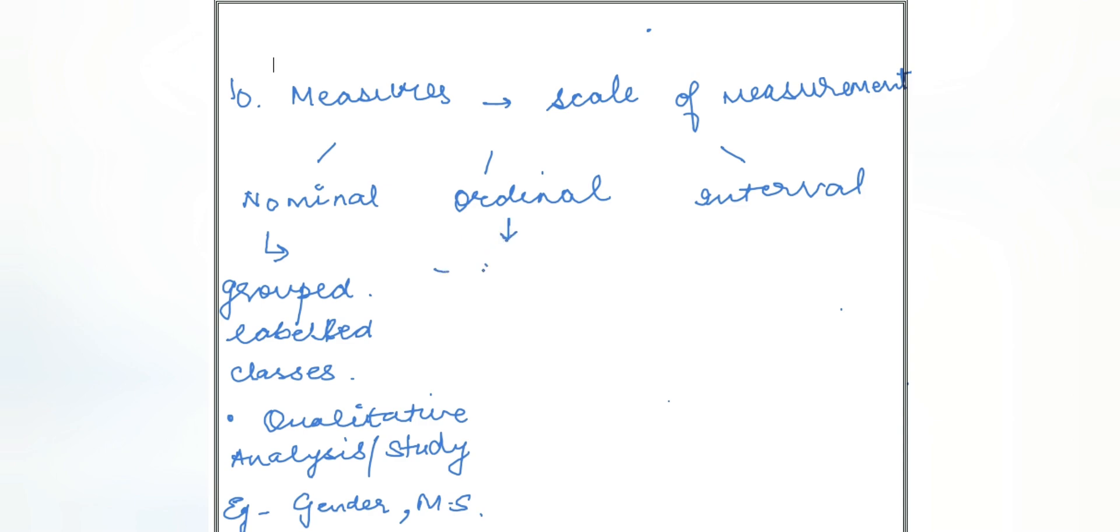Coming to the ordinal, it is in ranking order. Example: Qualification. A is bachelor, B is master's, C is PhD. So we can say C is more qualified than B and B is more qualified than A. Or we can say the second example. Top five good books. Covers under order.